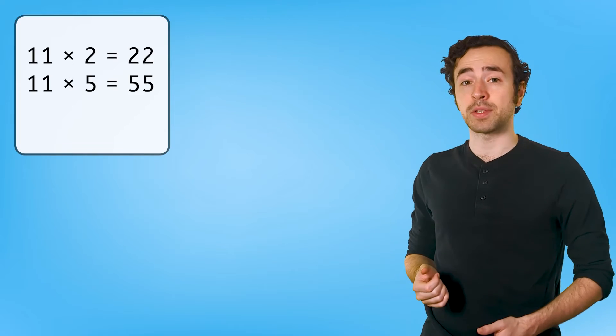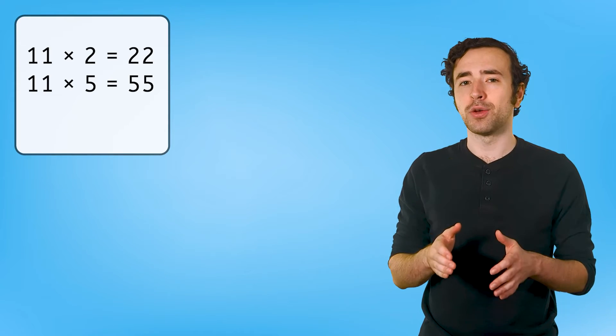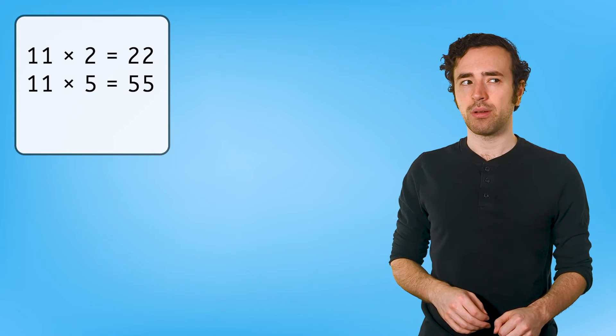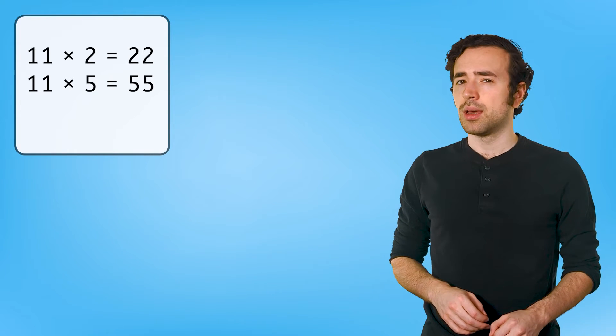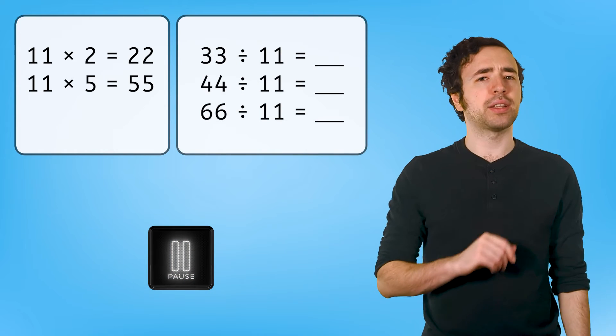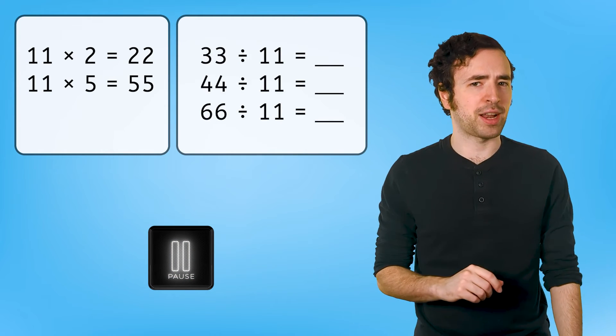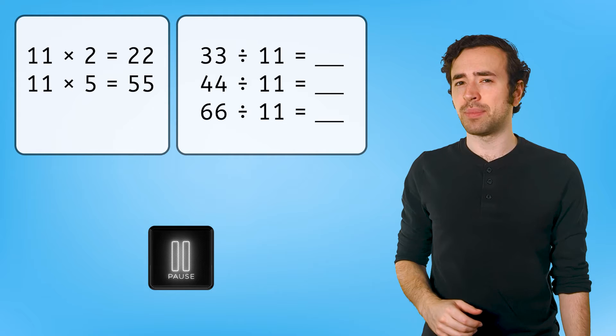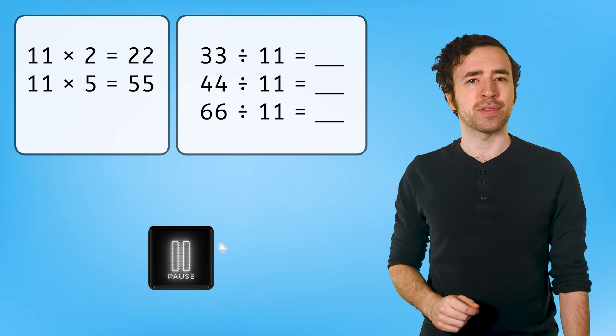When we multiplied 11 and a one-digit factor, like 11 times 2 or 11 times 5, the product followed a predictable two-digit pattern. But I wonder, is there a similar pattern for division? In your guided notes, solve 33 divided by 11, 44 divided by 11, and 66 divided by 11.